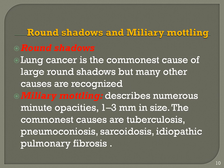Rounded shadows and miliary mottling are another feature seen on x-ray. Lung cancer is the commonest cause of a large rounded shadow, but many other causes are also recognized. Miliary mottling consists of minute opacities approximately 1 to 3 mm in size. The commonest cause of miliary mottling is tuberculosis, but it can also be seen in pneumoconiosis, sarcoidosis, and idiopathic pulmonary fibrosis. In the coming slides we will discuss some rounded shadows and their diagnosis, as well as miliary mottling.